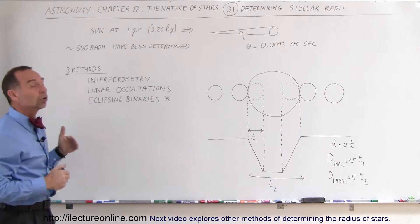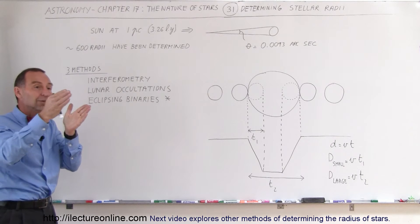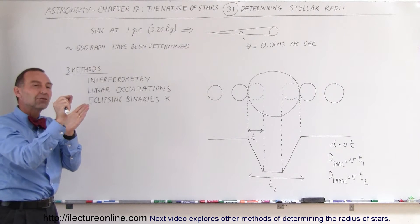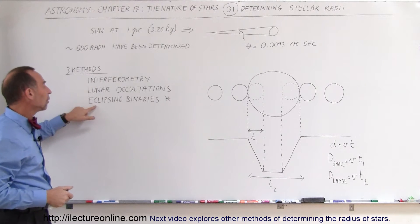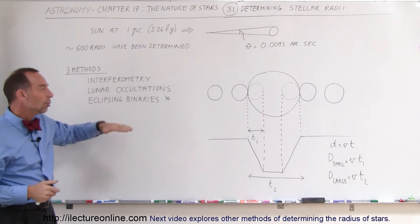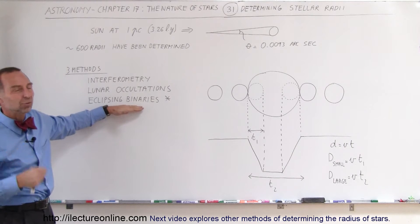Sometimes we use what we call lunar occultations. When something goes behind the moon, we measure the amount of time it takes for it to disappear behind the moon, and we sometimes can figure out the size from that. Or we use what we call eclipsing binaries, which is usually really the best way to do that.